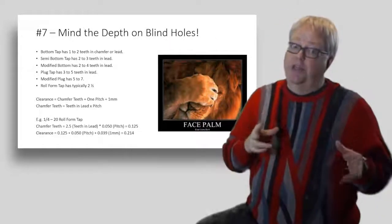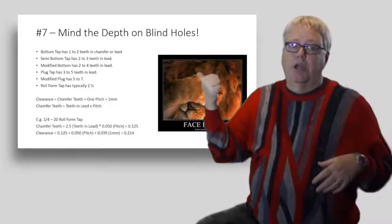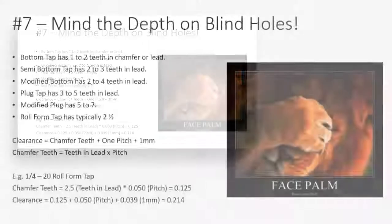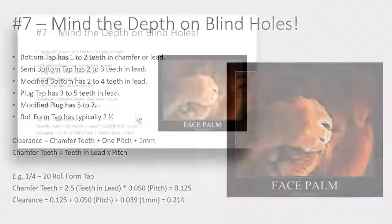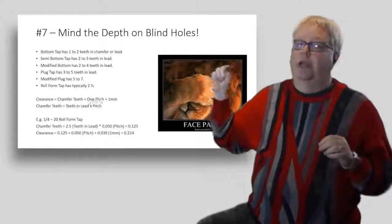I'll walk you through the math here on the left, but you can see that for our example, a quarter-20 roll form tap, we needed not quite a quarter inch of clearance from where the tap stopped to the hole bottom. You can also see that based on the type of tap, that clearance varies a little bit. So be sure you get this right and use these seven tips. You'll break a lot fewer taps.